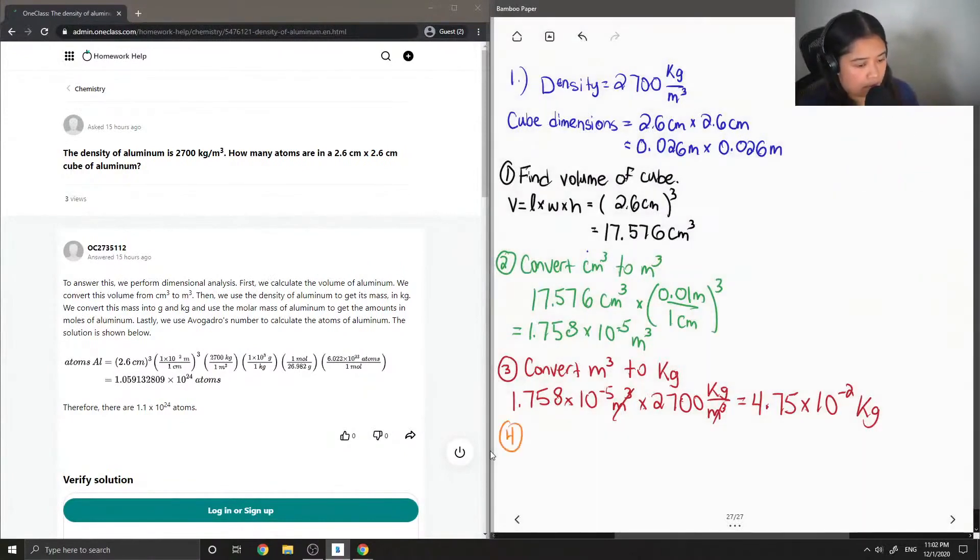So now we want to convert kilograms to grams. 4.75 times 10 to the negative 2 kilograms, multiply by the conversion factor to grams. So there are 1,000 grams in one kilogram. And you end up getting 47.5 grams.